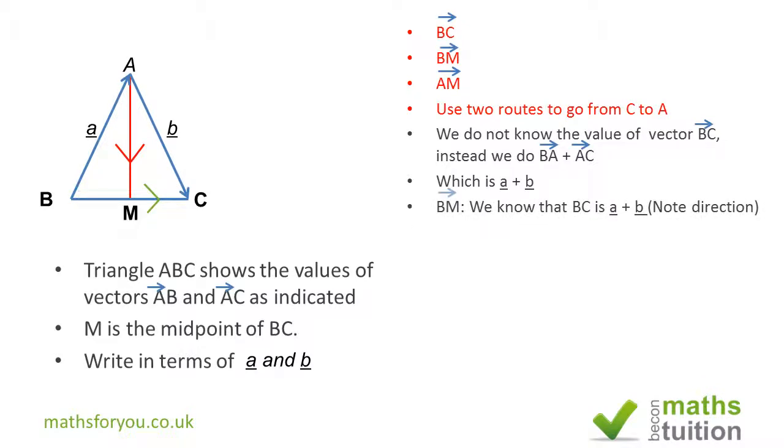Next we need to find vector BM. Vector BM is going to be half of vector BC because M is the midpoint of BC. So we then have BM will be ½(a + b).